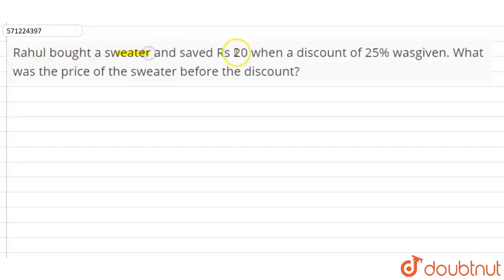bought a sweater and saved Rs 20 when a discount of 25% was given. What was the price of the sweater before the discount?